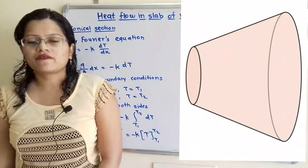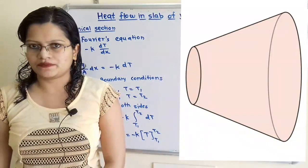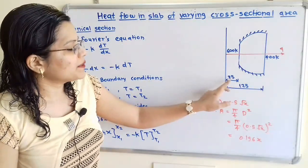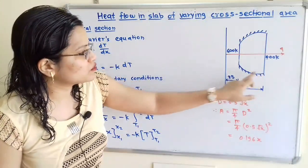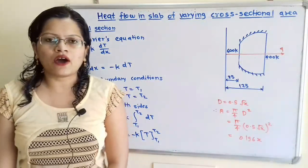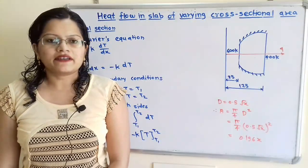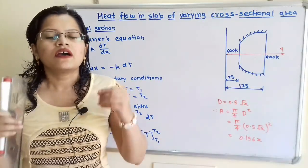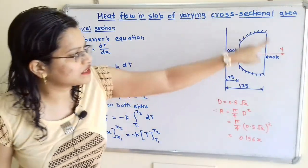As per the given question, here is the diagram of the conical section having circular cross section. The distance of the small end is 25 mm from the initial reference line and the large end is 125 mm from the same reference line. We have to find out the temperature distribution equation — that is, the temperature at any distance X from the initial end for this given diagram.